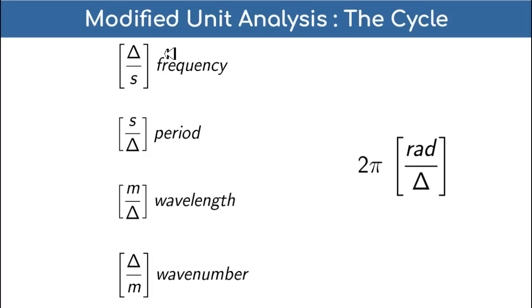In the domain of the cycle, frequency has units cycles per second. The time period - the length of time for one wave - is seconds per cycle. The wavelength, which in terms of the circle is the circumference of the circle, has units meters per cycle. And the wave number is the inverse of that - it has units cycles per meter. This is how I am trying to fix unit analysis so that we don't make mistakes in interpretation.